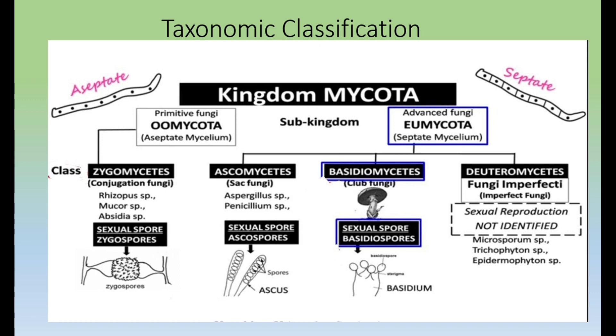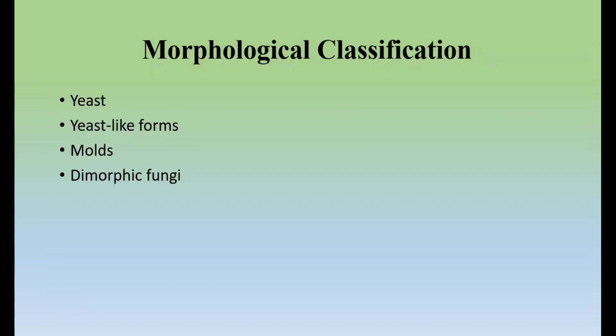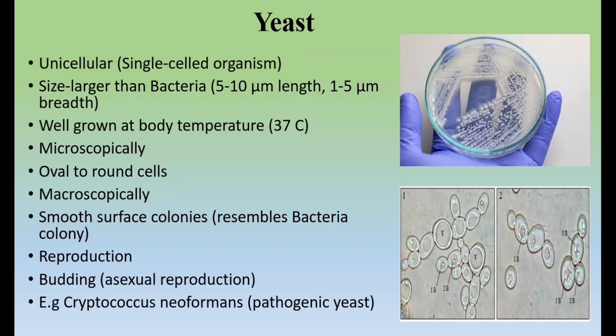Now the morphological classification: morphological classification is based on the shape of the fungi - whether they are yeast, yeast-like forms, molds, or dimorphic fungi. So there are four subcategories in morphological classification: yeast, yeast-like forms, molds, and dimorphic fungi.